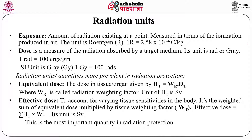Effective dose accounts for varying tissue sensitivities in the body. Not all tissues are equally sensitive to radiation or contribute equally to health detriment. For example, extremities are less radiation-sensitive than stem cells or gonadal cells. Each tissue or organ has been assigned a tissue weighing factor depending on its sensitivity. Multiplying equivalent dose by the tissue weighing factor gives effective dose, whose unit is the Sievert (Sv) — the most important quantity in radiation protection.